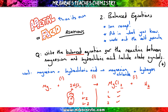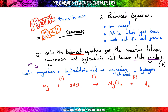The part people always miss is the state symbols. Magnesium is a metal — if it's a metal it's always going to be solid, the only exception is mercury. Hydrochloric acid — all acids are aqueous. Your salts are normally aqueous; go with aqueous unless it tells you otherwise. And hydrogen is a gas — lit splint, squeaky pop. And that gets you your fourth mark.